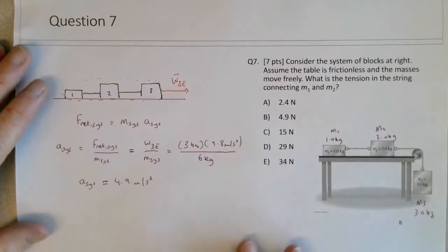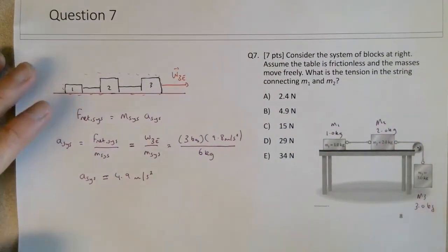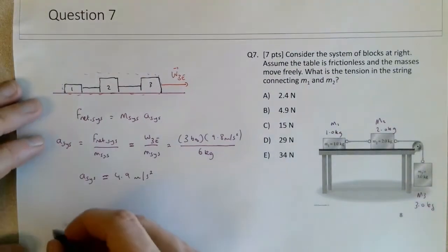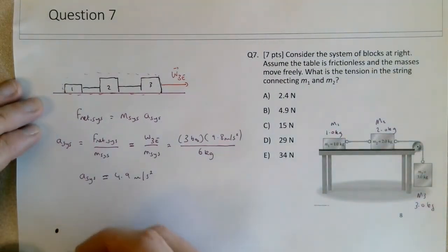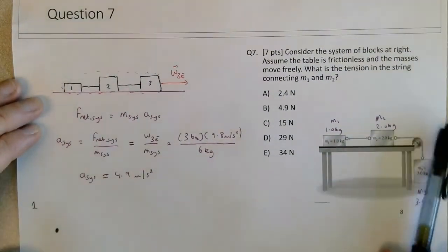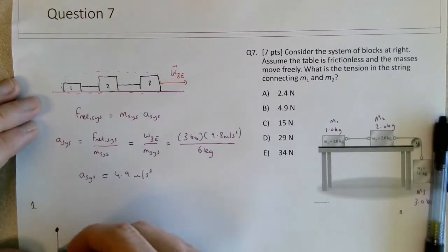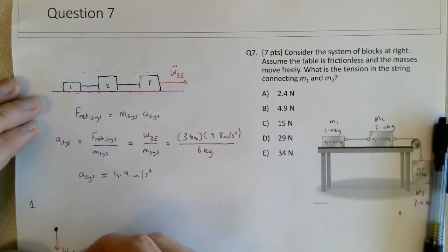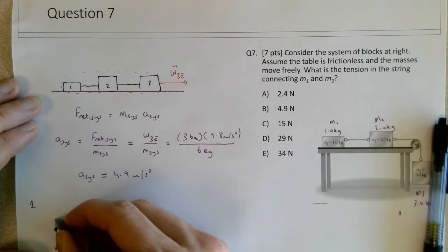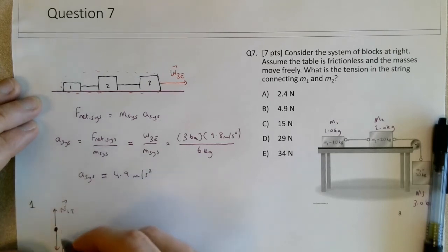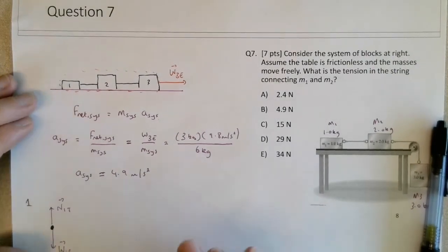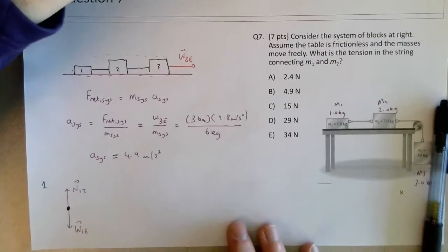So as I mentioned earlier, if you think about a free body diagram for block 1, we know we would have a weight force on 1 by the earth. There will be a normal force on 1 by the table. Those two will be equal magnitude because I know there's no y acceleration of block 1.